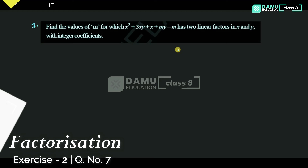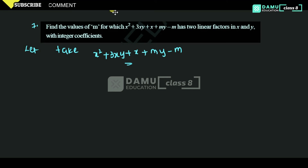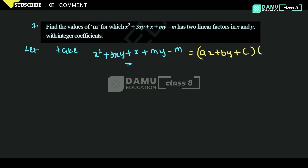So this is the seventh question. To find the linear factors, we need to take that expression and equate it with another expression. We assume the factored form as (ax + by + c) into another factor (ex + fy + g).